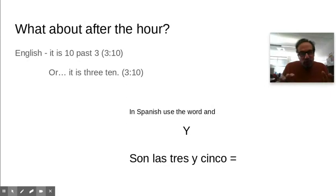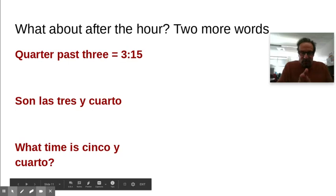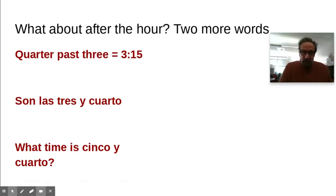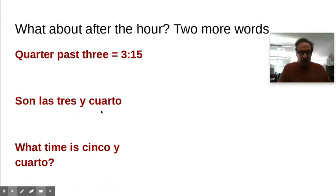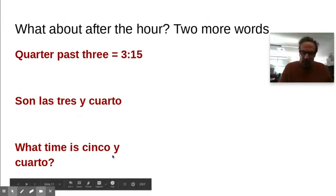And then two more things to learn. I know you guys don't use this much, but us older people, we do. Quarter past means three fifteen. It's a quarter. In Spanish, the way we say it is, son las tres y cuarto. Tres y cuarto. What time is cinco y cuarto? Cinco y cuarto. It'd be quarter past five.